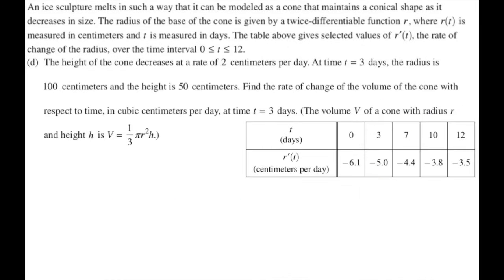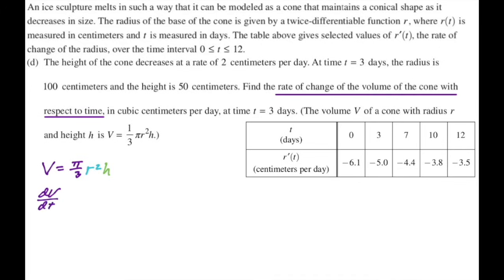For part D, the height of the cone decreases at a rate of 2 centimeters per day. At t equals 3 days, radius is 100 and height is 50. Find the rate of change of the volume with respect to time. We want dV/dt. Volume is pi over 3 times r squared times h. Differentiating implicitly using the product rule: dV/dt equals pi over 3 times the quantity r squared times dh/dt plus h times 2r times dr/dt.